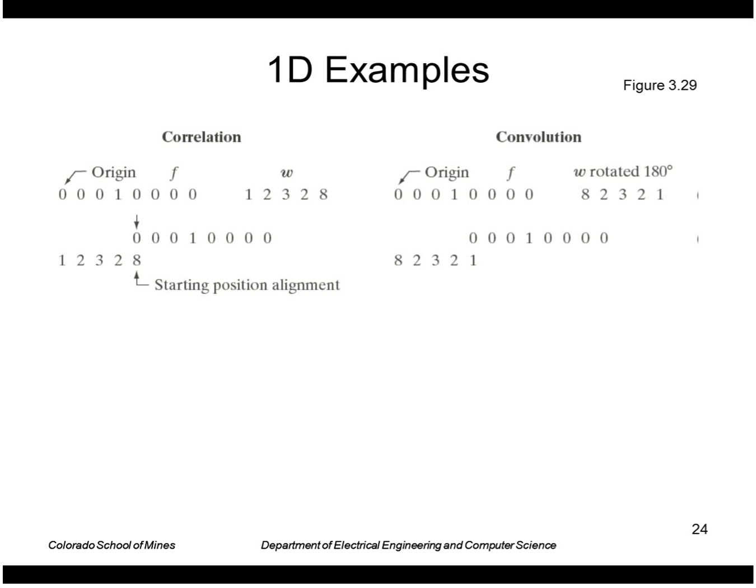For correlation, we take our mask and slide it past the image, doing sum of products. In the first few positions, everything is zeros, so the outputs are zeros.